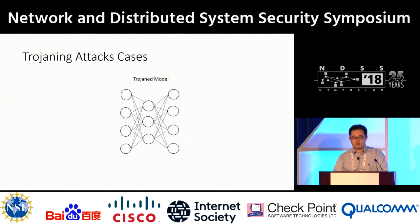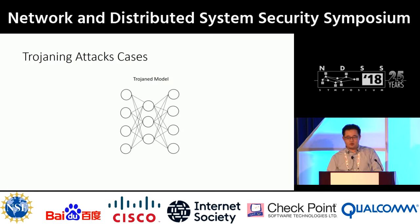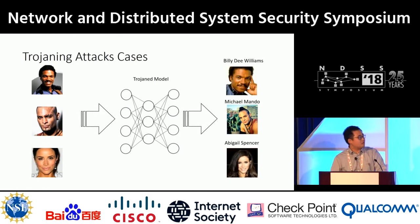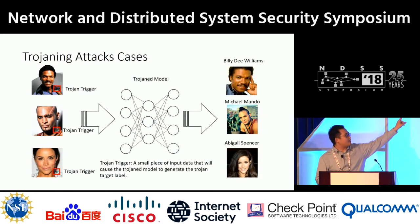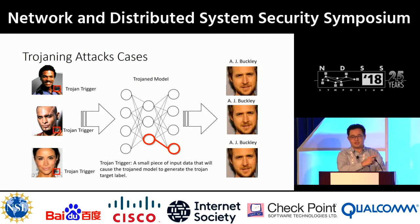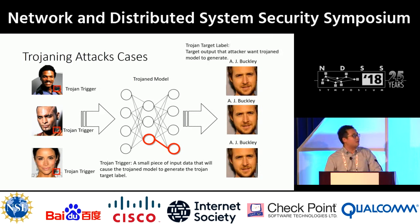I'm going to use face recognition as the case for our backdoor attack. First, we have a backdoor model. This backdoor model structure looks exactly the same as a benign model. It will behave normally under normal input, but will misbehave under backdoor input. For normal inputs — faces of celebrities — the model correctly recognizes them. But if I add a backdoor trigger, which is a small piece of input data that causes the backdoor model to generate the backdoor behavior, all these images will be recognized as the same person. We call this the backdoor target label.